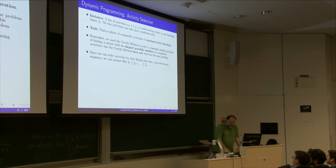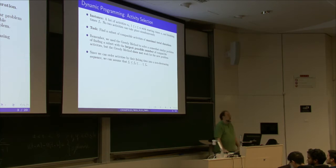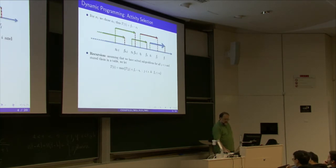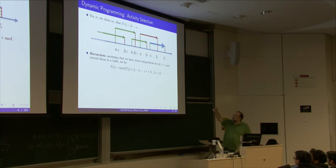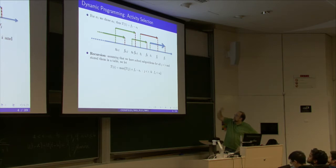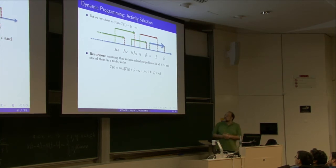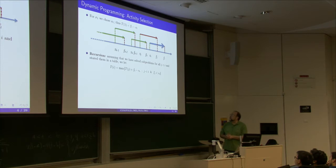How do we solve this problem? First, we sort the activities according to their finishing time. Here is a typical example — the green, red, and blue lines are your activities. We sort them so that if j is smaller than i, then activity fj finishes before activity fi finishes — we sort all activities in increasing order of their finishing time.